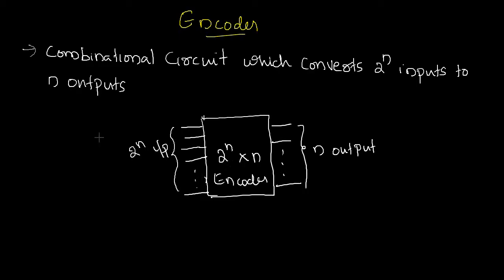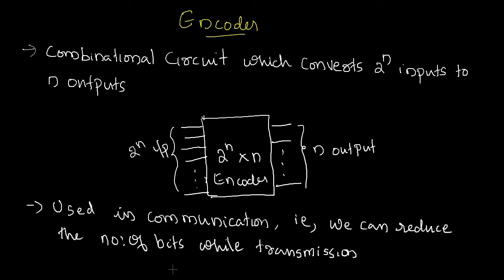Encoders are mainly used in the field of communication. We can reduce the number of bits while transmission. By reducing the number of bits during transmission, we can reduce the transmitted power and we can reduce the bandwidth. That is the main use of an encoder. However, the major problem is that accuracy will reduce while encoding.